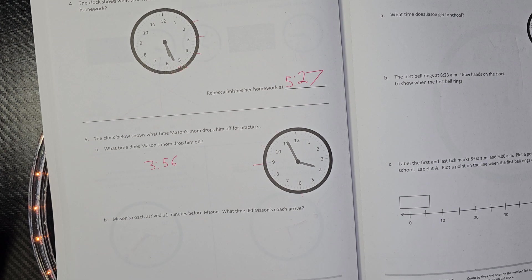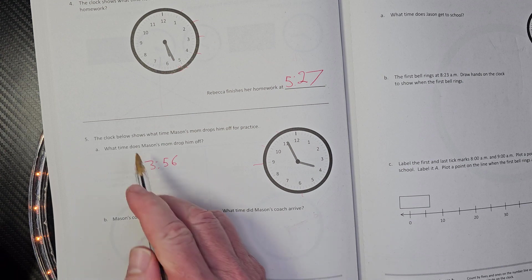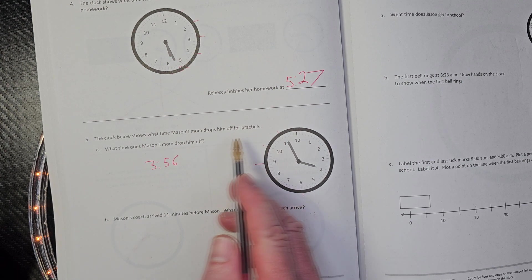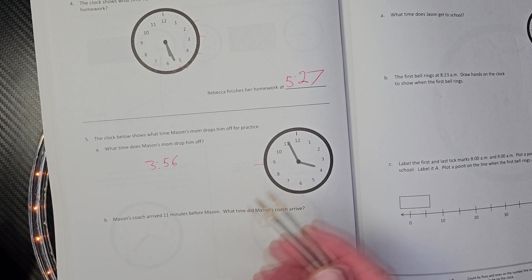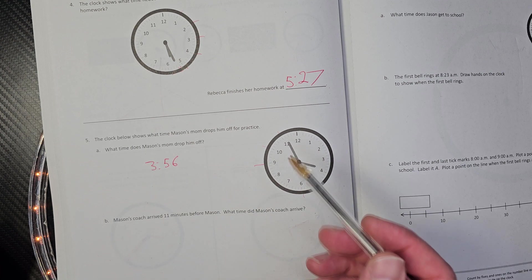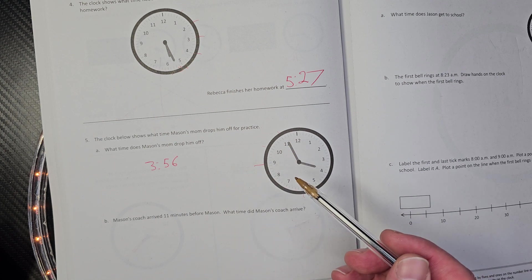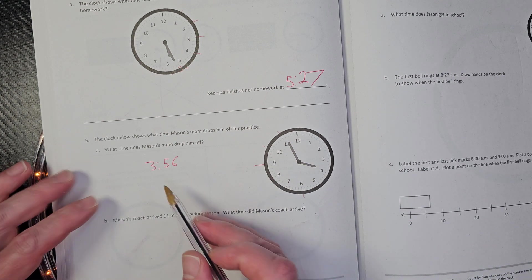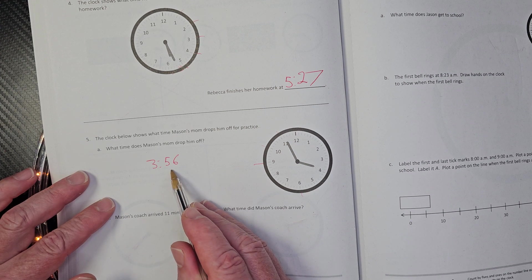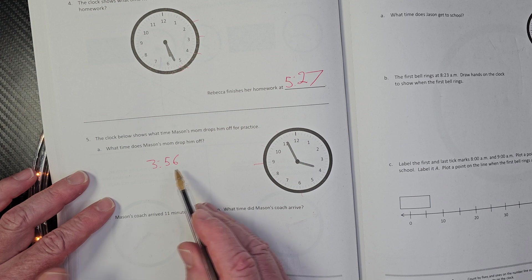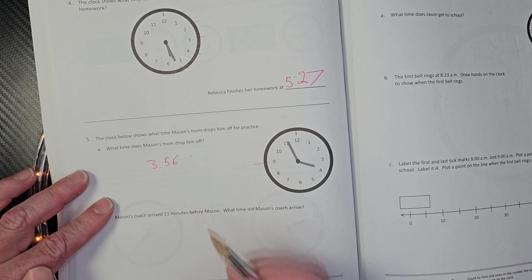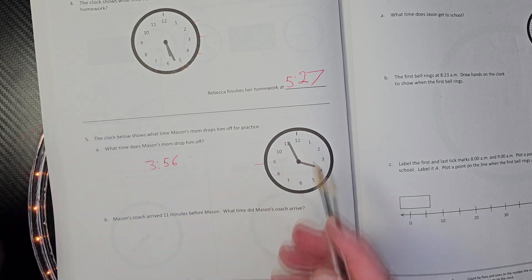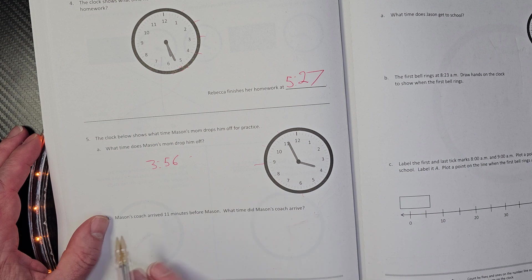So does it say AM or PM? The clock below shows what time Mason's mom drops him off for practice. Okay. What do you assume this is going to be? Is this going to be AM or PM? Take a minute there. Well, if it was at 356 in the morning, he would be so tired for school. I'm guessing it's going to be PM. All right. So I think that would be PM. These are questions that we should always ask ourselves. Great learning opportunities.